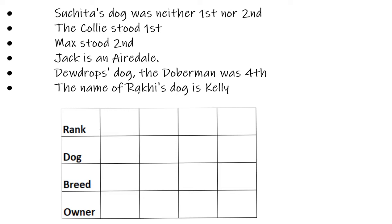In this question I have made a table and put the four parameters here. I'm going to map the positive ones. The first statement says Collie stood first, so the first dog is a Collie. Then it says Max stood second, so the second dog is Max.